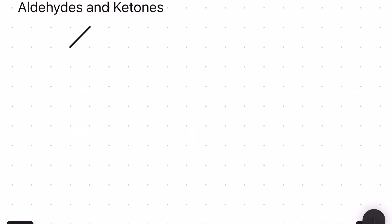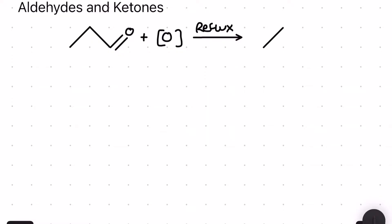Next up are the closely related functional groups — usually structural isomers of each other — aldehydes and ketones. For the first reaction, aldehydes only can be oxidized by heating under reflux with acidified potassium dichromate(VI) to make a carboxylic acid only. There's no water as another product in that reaction, so please don't make that mistake.